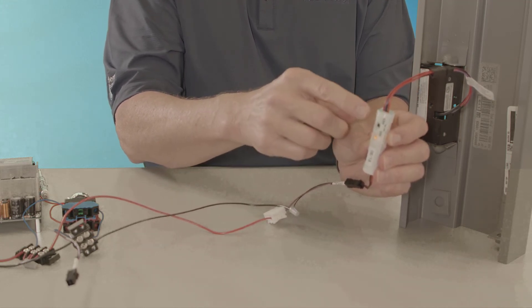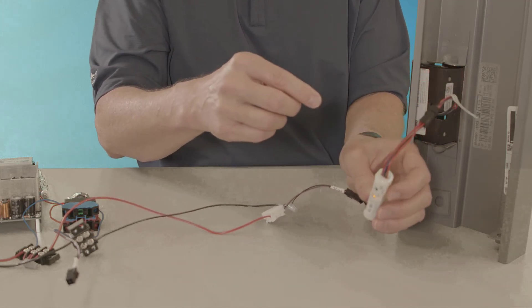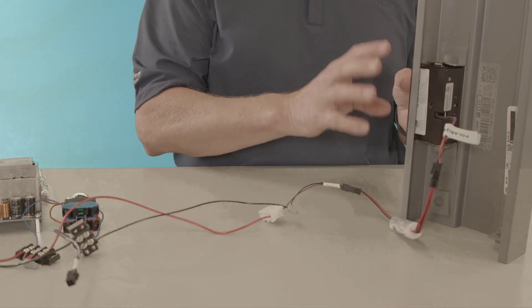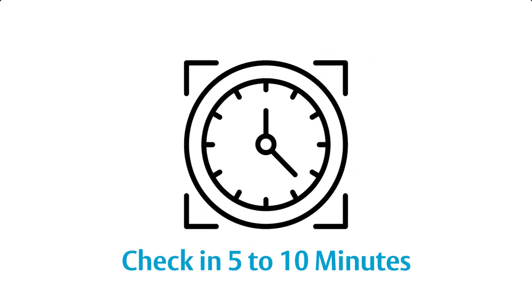And we know it's working right when my yellow light pops up. I've got proper voltage running through my Smart Pack into my electric strike, and you can actually hear the strike re-engage once I powered it back up. In about five to ten minutes, we're going to come back and we're going to recheck our electric strike keeper to see if it's still warm.